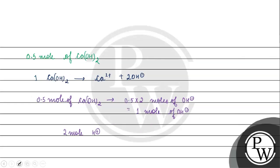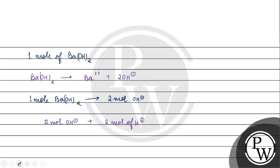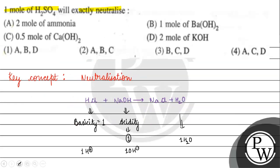Coming back to the question, the correct answer is Option A, Option B, and Option D. This corresponds to answer choice Option 1 (A and D) — wait, the correct options that neutralize are A, B, and D, making Option 1 the correct answer for this question. I hope you understood it well — thank you and all the best.